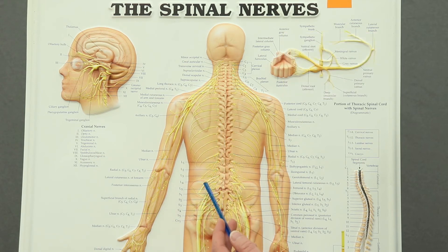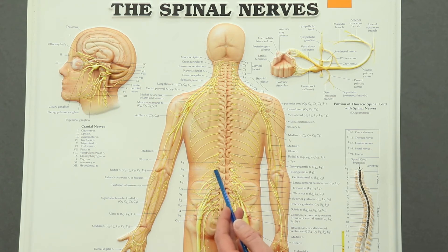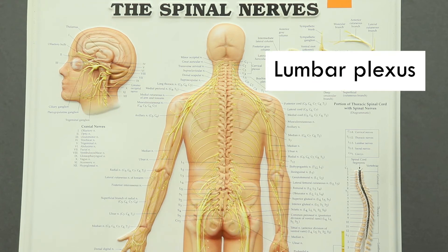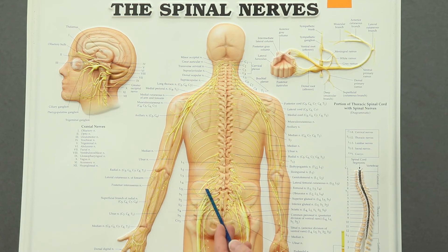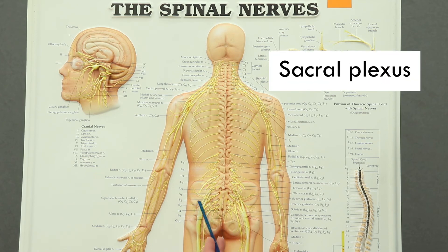Moving a little farther down, we notice this next big network of nerves. This is another plexus — the lumbar plexus. We'll talk in the next unit about what nerves come off of that one. And then below that, we have the large sacral plexus. Again, we will cover the nerves that come off of the sacral plexus in the next unit.